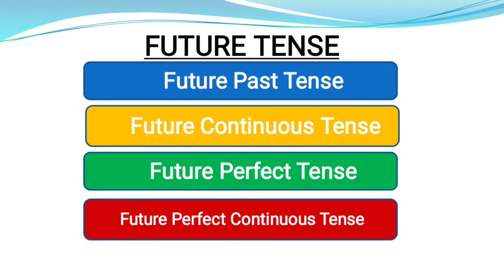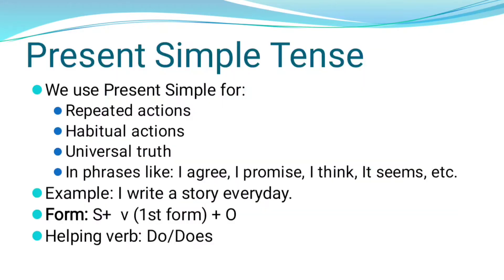Then future tense also has four types: simple future, future continuous, future perfect, and future perfect continuous. Now we should study present tense — starting with simple present.